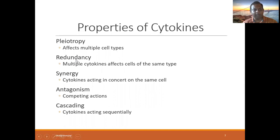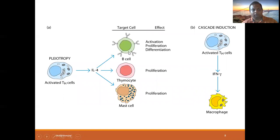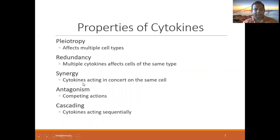Redundancy: multiple cytokines can affect cells of the same type. For example, one B cell may be activated by interleukin-4, causing proliferation and differentiation. With interleukin-1, it goes one way; with interleukin-17, another way.